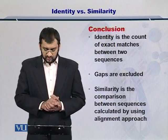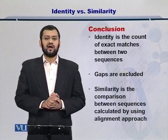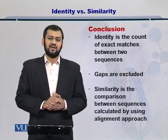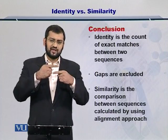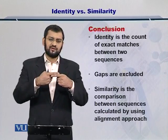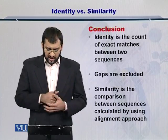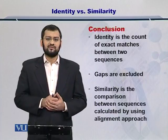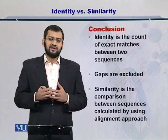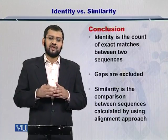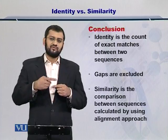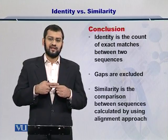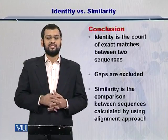In conclusion, identity is the count of nucleotide or amino acid matches that are exactly matching between two sequences, with gaps excluded. Similarity is a different layer in which you compare the two sequences after aligning them with each other.